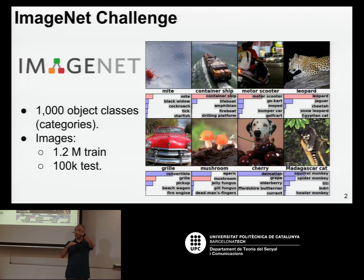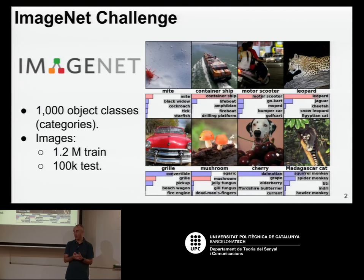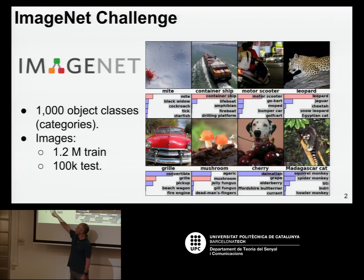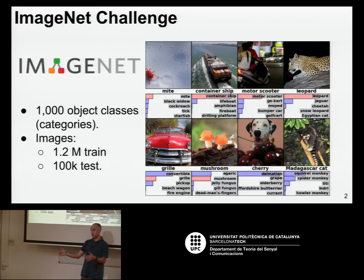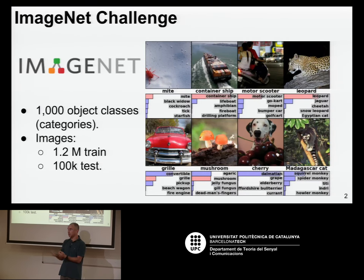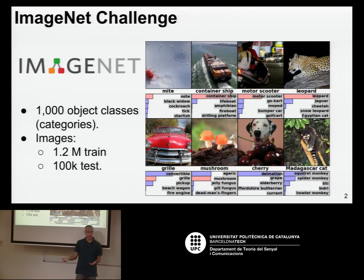If one of the top five predictions was the correct one, that prediction was considered correct — those were the rules of the competition. The organizers released a dataset of 1.2 million images for training — each with an image and its object class label — and 100,000 images for testing that you were supposed to predict.